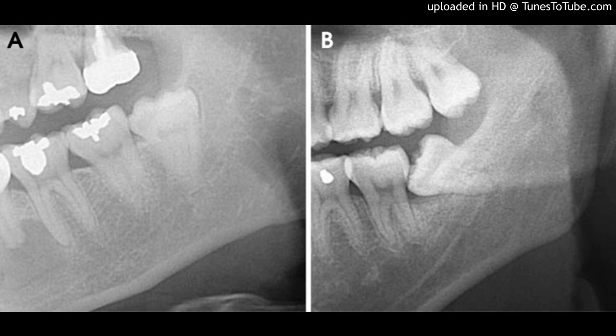Conclusion: This study showed that the presence of any of the radiographic signs cannot definitely predict a true relationship. However, the presence of a close sign on panoramic radiography is often associated with a true relationship to the canal.